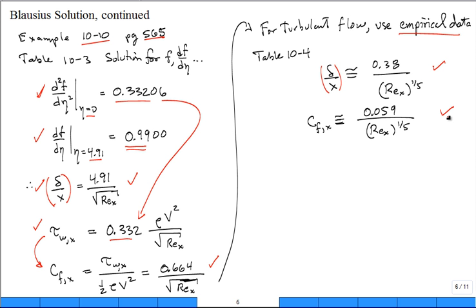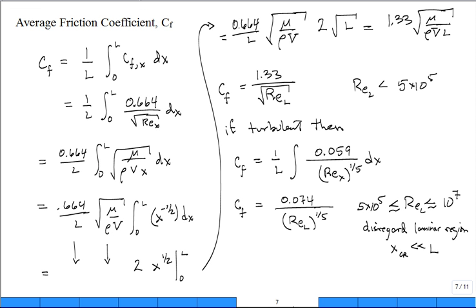That's all for laminar flow. What about turbulent flow? They studied it empirically. They have data that support it and the rate at which it grows is about 0.38 divided by Reynolds number to the one-fifth and the local friction coefficient is a constant over Reynolds number to the one-fifth. Here it is for boundary layer growth, local friction coefficient for laminar, here it is for turbulent. Those are tabulated and put in your textbook.